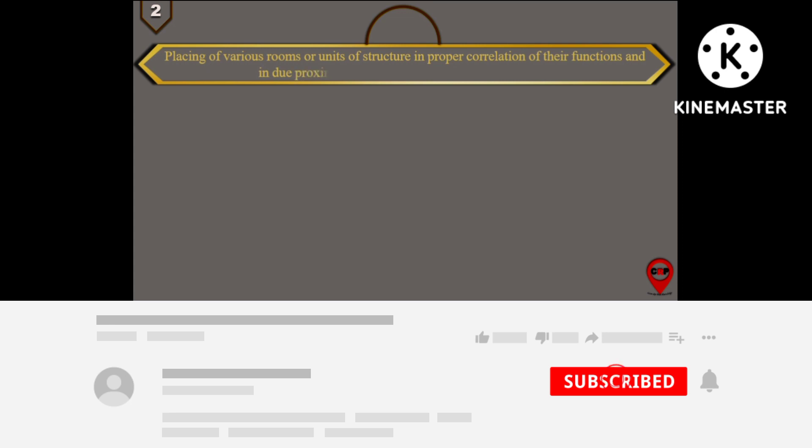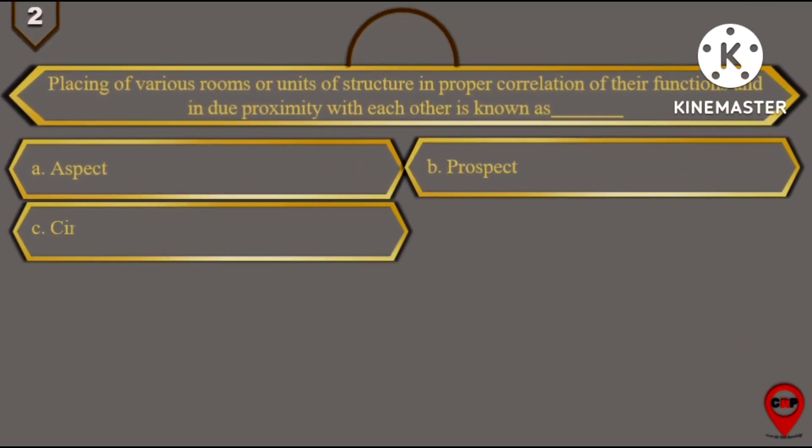Second question: Placing of various rooms or units of structure in proper correlation of their functions and in due proximity with each other is known as. Options are: A. Aspect, B. Prospect, C. Circulation, and D. Grouping.